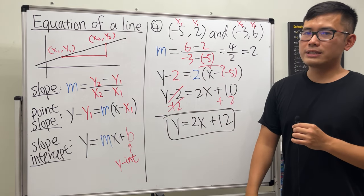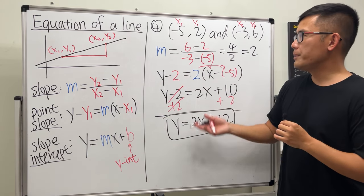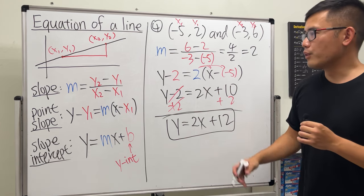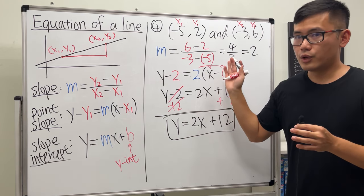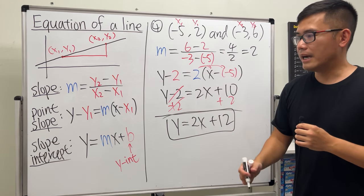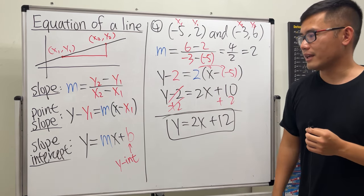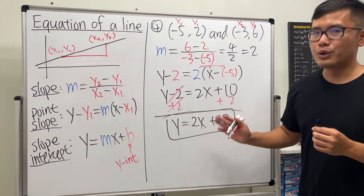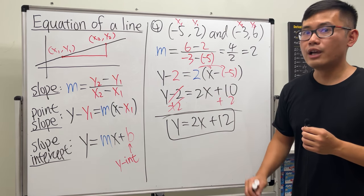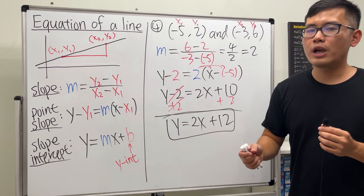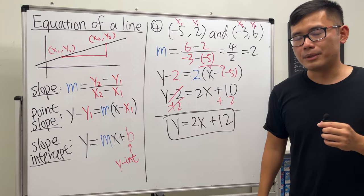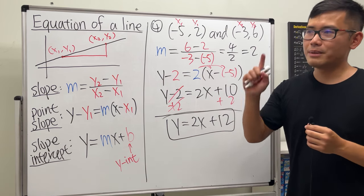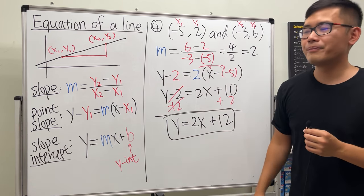Add 2 to both sides: y = 2x + 12. That is the equation of the line through those two points. If you need more help, comment your questions below or check out the other videos.